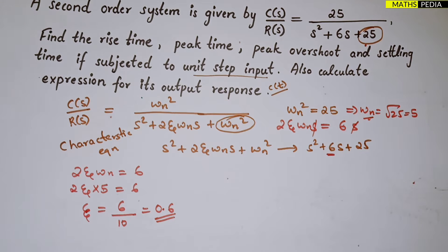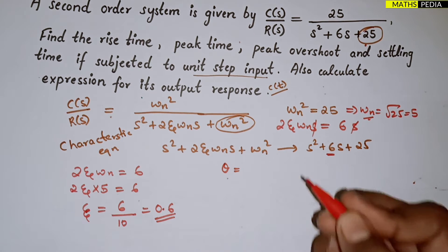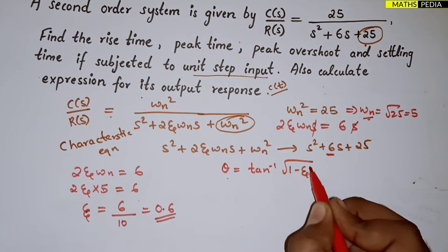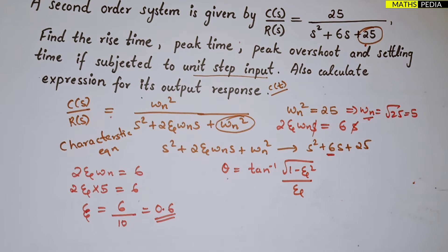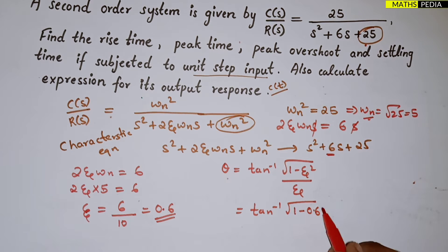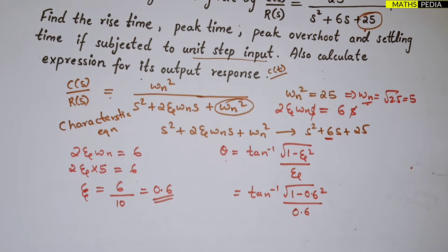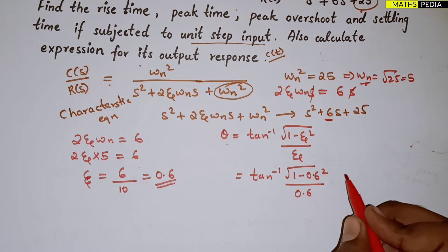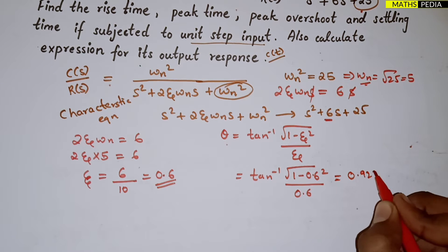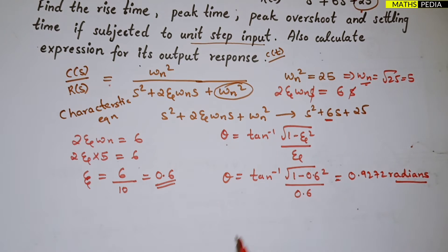The next step is to find θ. θ is nothing but tan⁻¹(√(1 - ζ²) / ζ). Substituting ζ = 0.6, we get tan⁻¹(√(1 - 0.6²) / 0.6). Putting it in the calculator, θ equals 0.9272 radians.